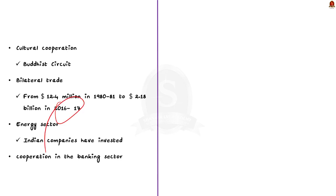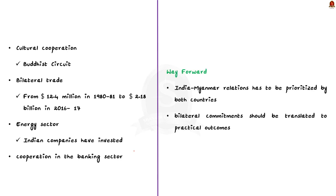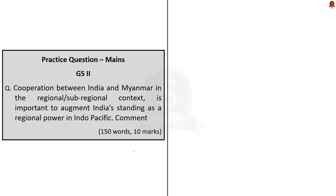Along cultural lines, the Buddhist Circuit initiative seeks to double foreign tourist arrivals by connecting ancient Buddhist heritage sites across Indian states, also aimed at Buddhist-majority Myanmar. Bilateral trade has grown from $12.4 million in 1980 to $2.18 billion in 2016-17. Myanmar is a beneficiary of the Duty-Free Tariff Preference Scheme for Least Developed Countries (LDCs). Indian companies like ONGC Videsh Limited have invested in Myanmar's energy sector, and the United Bank of India and Exim Bank have representative offices in Myanmar.